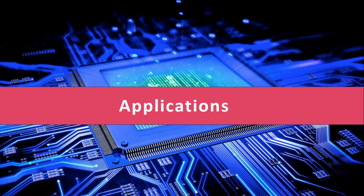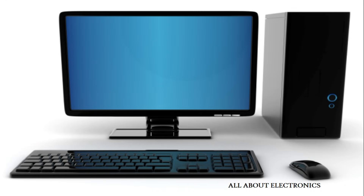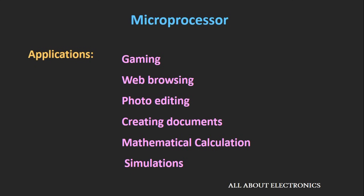First, let's see the difference in terms of the applications in which they are used. The classic example of a microprocessor application is a personal computer or a laptop. Using a laptop, we can do a lot of things — gaming, web browsing, photo editing, creating documents, mathematical calculations, simulations, or media streaming. A microprocessor is basically used in applications where the task is not predefined; it depends upon the user.